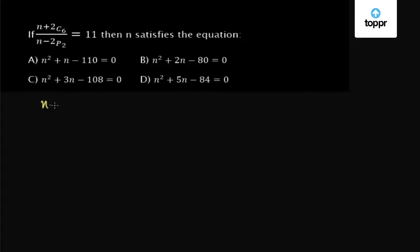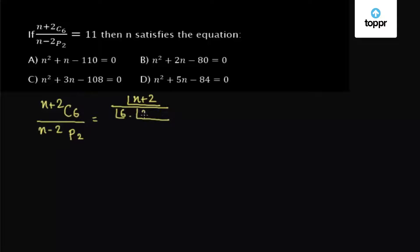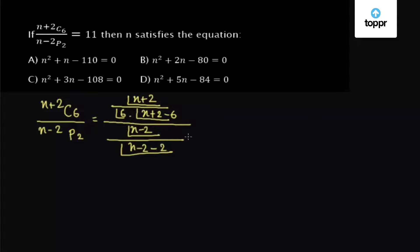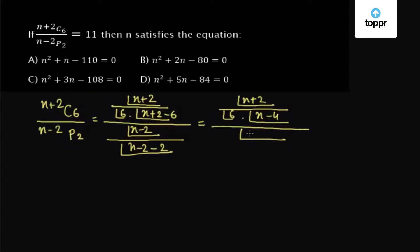Let's first write down (n+2)C6 upon (n-2)P2, which equals factorial(n+2) divided by factorial(6) times factorial(n+2-6), whole divided by factorial(n-2) upon factorial(n-2-2). This simplifies to factorial(n+2) upon factorial(6) times factorial(n-4), divided by factorial(n-2) upon factorial(n-4).